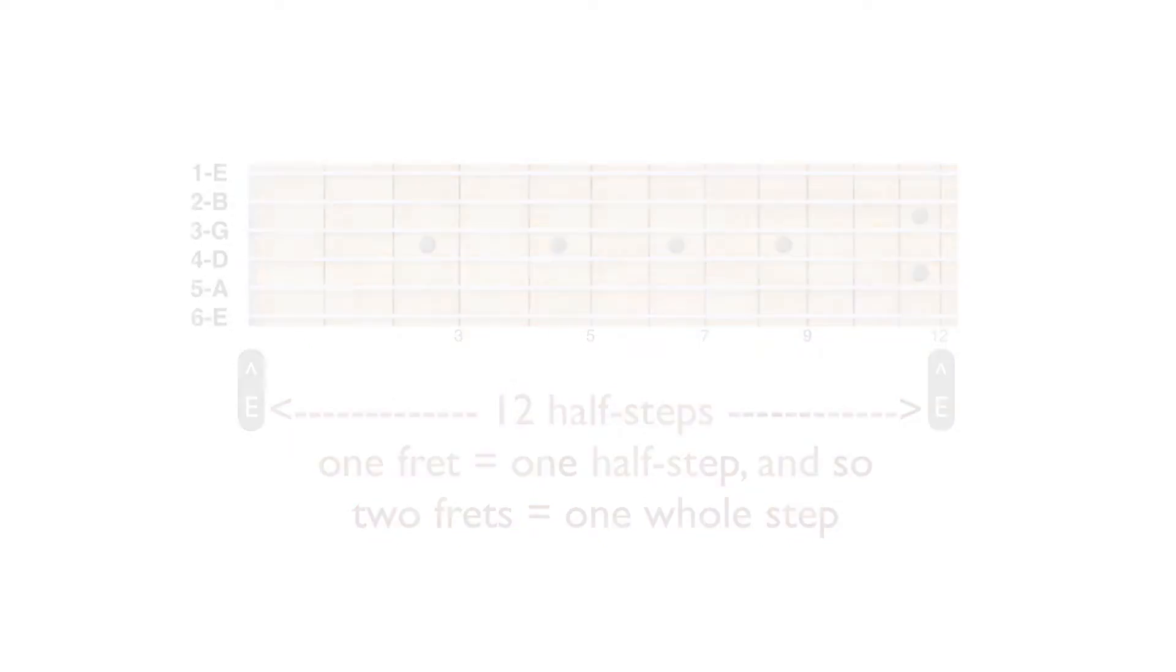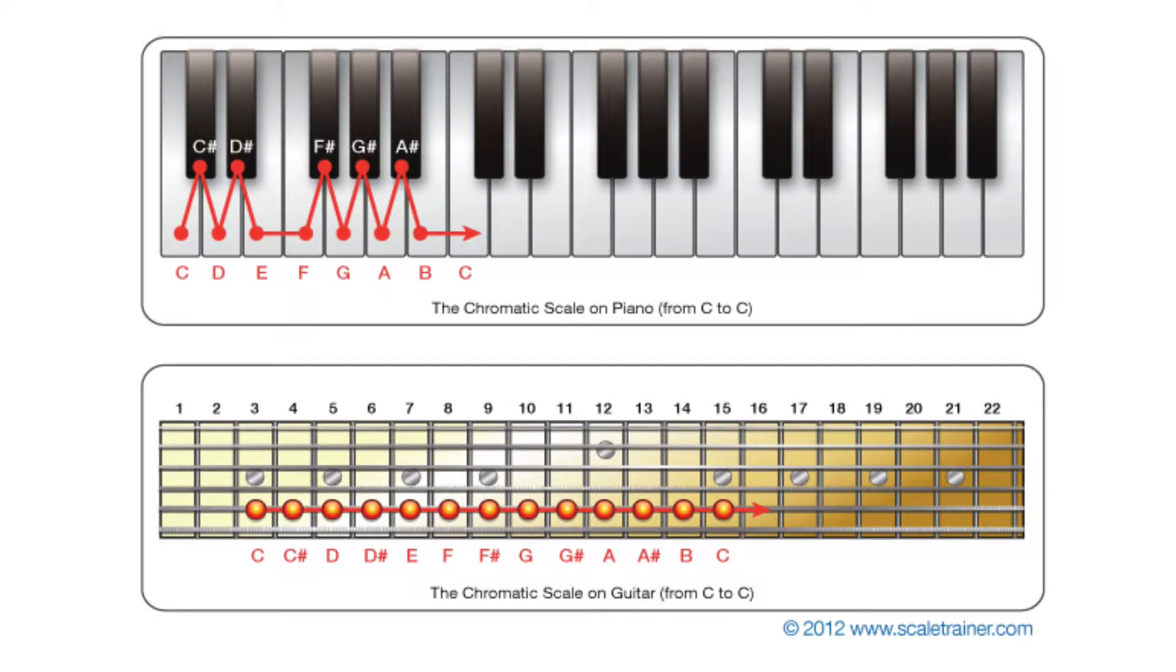Check out this handy graphic I found depicting the chromatic scale as it appears on both piano and guitar. You will see that we have seven so-called natural notes—A, B, C, D, E, F, G—and that in between most of these notes we have what's called accidentals or chromatics, sharp and flat versions of the neighboring notes.